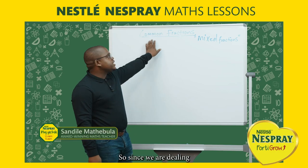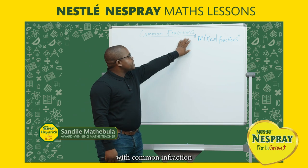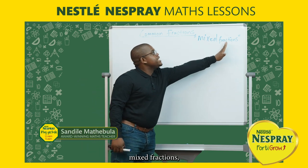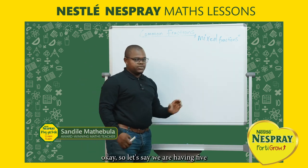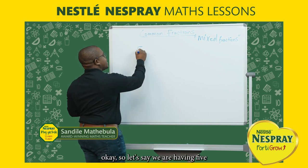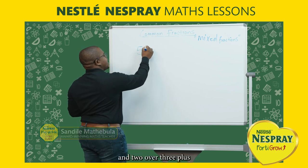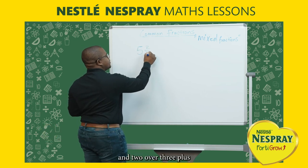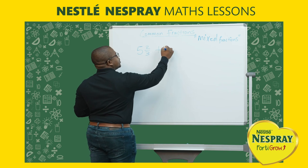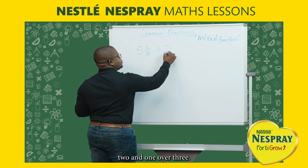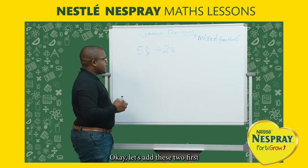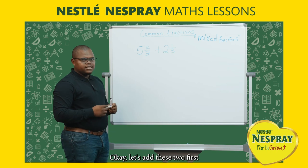Since we are dealing with common fractions and we are going to add mixed fractions, let's say we are having five and two over three plus two and one over three. Let's add these two.